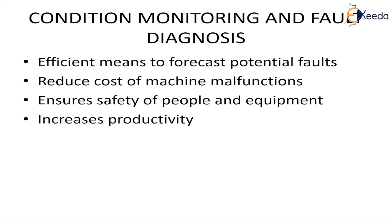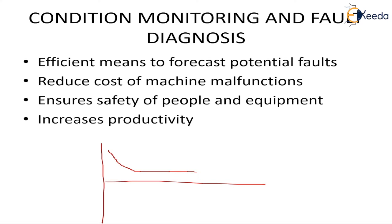Vibrations also follow the bathtub curve pattern. Initially, the chances of vibration increase are high at the beginning of the product's life. Once that period passes and the product enters its normal working life, vibrations are less because the machine is in good condition. However, after extended use, wearing starts, and vibrations increase again due to fatigue, wear, cracks, and other factors introduced over time, leading to higher chances of failure during the aging period.